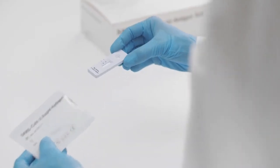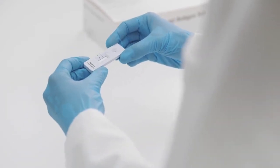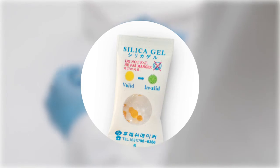Now, open the foil pouch and remove the test device and the desiccant package. Take a moment to ensure that the test device is undamaged and that the desiccant status indicator shows valid.